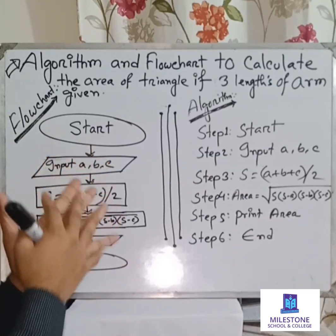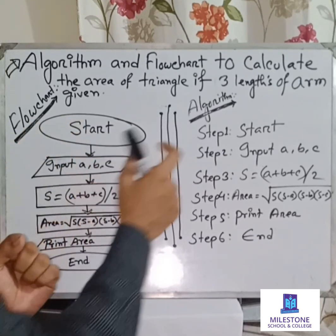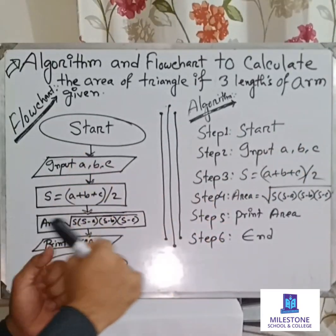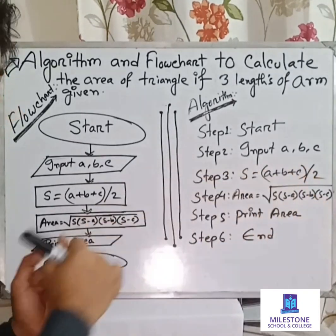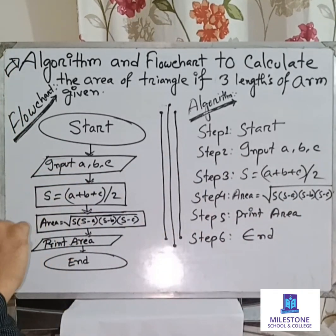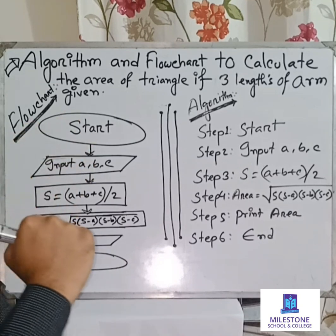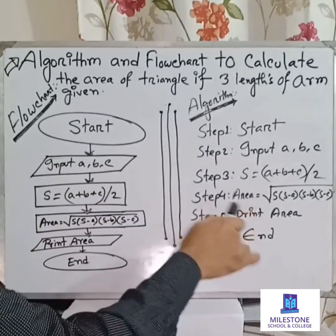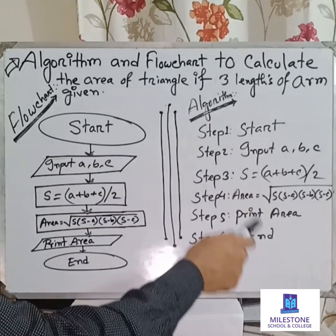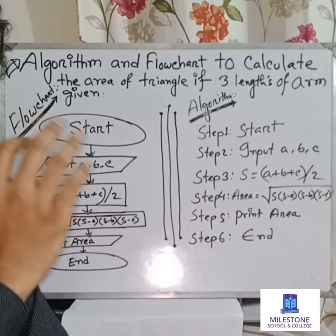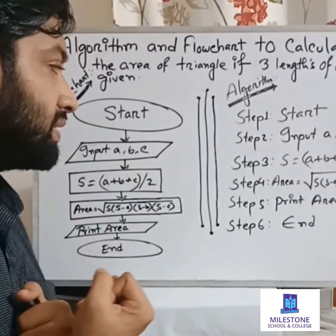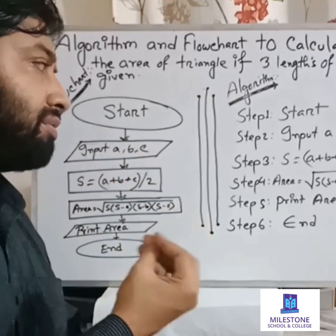To summarize the algorithm: Step 1 — Start. Step 2 — Input a, b, c. Step 3 — s = (a + b + c) / 2. Step 4 — area = square root of s × (s − a) × (s − b) × (s − c). Step 5 — Print area. Step 6 — End. I hope you understand the algorithm portion.